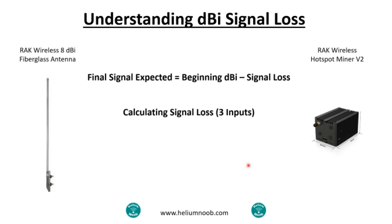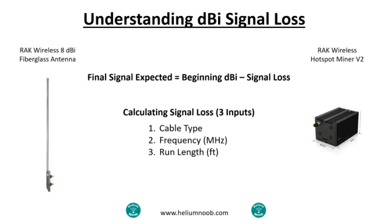In order to calculate the signal loss, we need three inputs. The first input is going to be the cable type — the actual type of cable that you're running from the antenna to the miner. Next, you're going to need to know the frequency. In the United States it's 915, but depending on which country you're in it could differ, so keep that in mind. The third input is the run length — the length between the antenna and the miner.